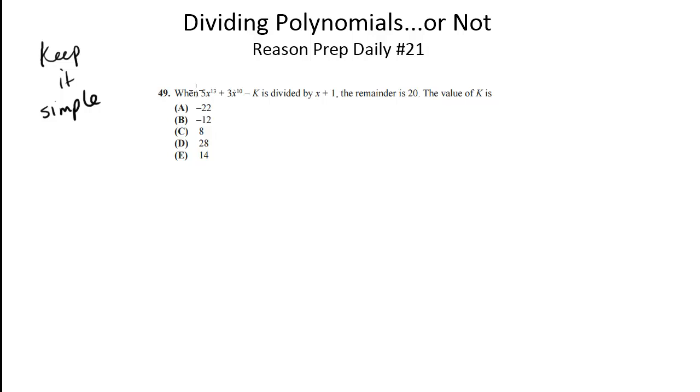So on a question like this, given this polynomial 5x to the 13th plus 3x to the 10th minus k divided by x plus 1, the remainder is 20. What is the value of k? A question like this, your first instinct might be to say, okay, well, this is dividing into this polynomial, so let me set up some long division: 5x to the 13th plus 3x to the 10th minus k. And then I'll start dividing this in, and then you'll realize it's going to take forever because this is 5x to the 13th, so we're going to have a ton of terms to this quotient here.